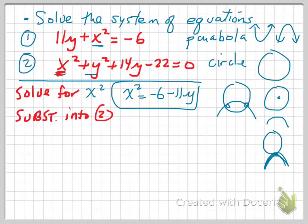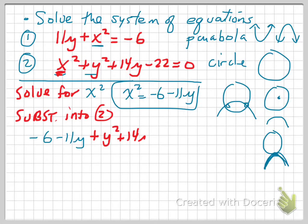x is only occurring once in equation two, so it's going to be a very easy substitution. When I substitute x squared equals minus 6 minus 11y into equation two, I'm going to have minus 6 minus 11y — that's what my x squared value is — plus y squared plus 14y minus 22 is equal to zero. That's great because now I only have one variable, and that variable is y.